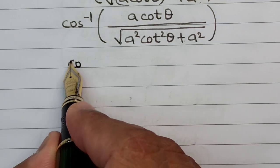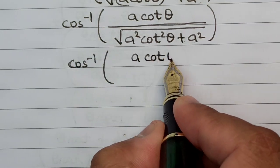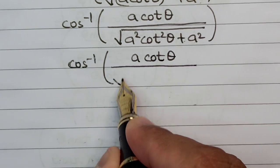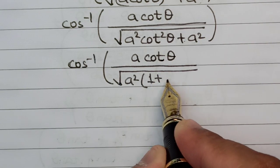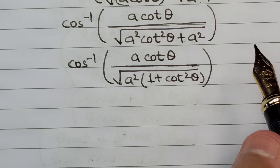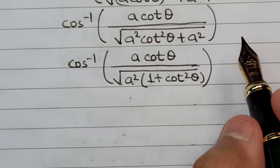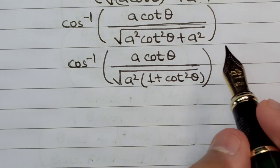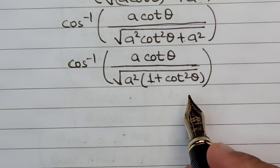So this will be cos⁻¹ of a cot θ divided by square root of a² taken as common, so we'll have 1 + cot² θ here. Now if you look closely, we can apply the standard trigonometric identity here, which is 1 + cot² θ can be taken as cosec² θ.